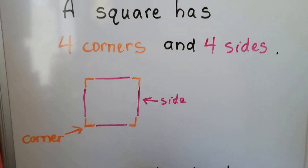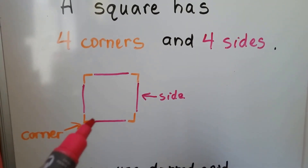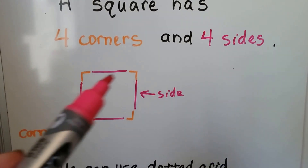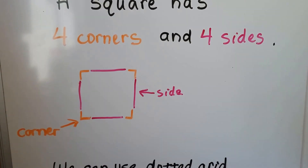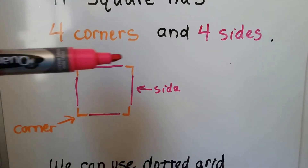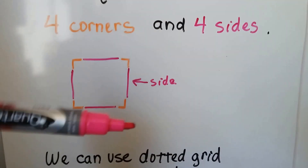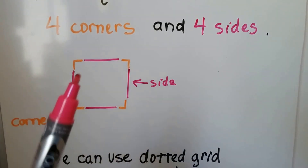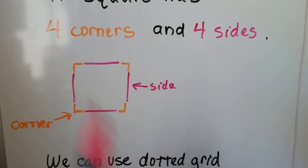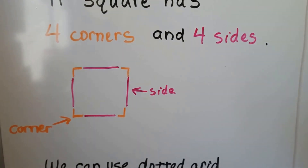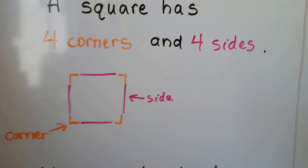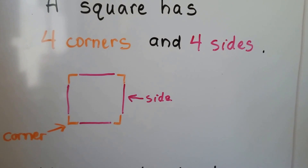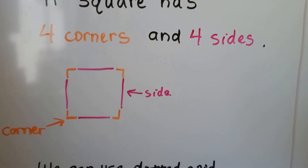We can see the corners: one, two, three, four. And we can see each side: one, two, three, four — four sides. And because it's a square, all the sides are the same length.